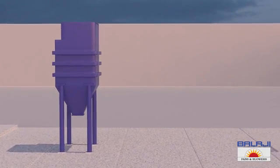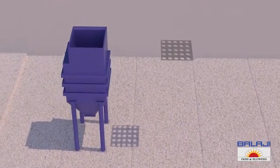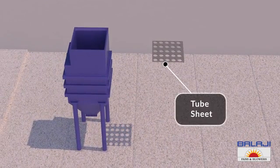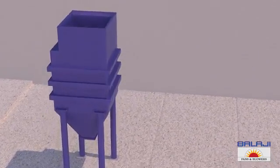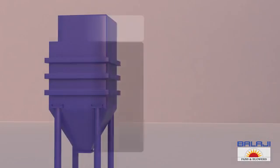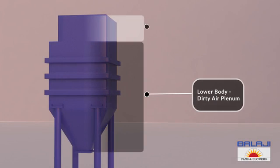It is divided by a tube sheet into two parts. The lower body is called dirty air plenum, and the upper body is called clean air plenum.